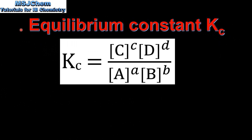Now we look at the equilibrium constant Kc. Here is the equilibrium constant expression for the reaction in the previous slide. Just like the expression for the reaction quotient Q, in the numerator we have the concentrations of the products C and D raised to the power of their coefficients. And in the denominator we have the concentrations of the reactants A and B also raised to the power of their coefficients.